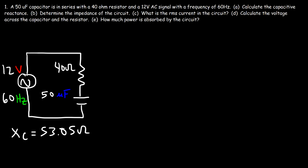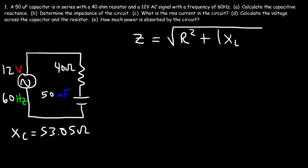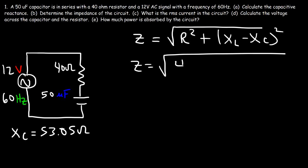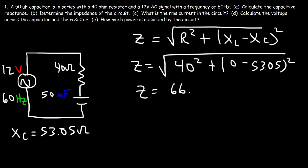Part B: determine the impedance of the circuit. The impedance Z equals the square root of R squared plus (XL minus XC) squared. XL is the inductive reactance, and we don't have any inductors, so XL equals 0. Therefore Z is the square root of 40 squared plus 53.05 squared, which gives Z equals 66.44 ohms.